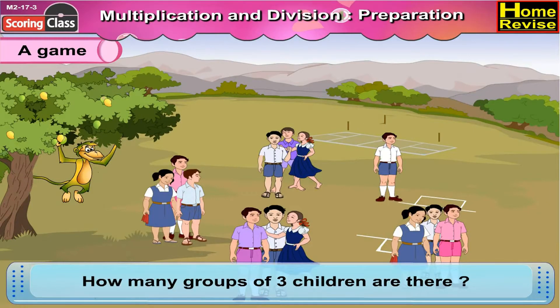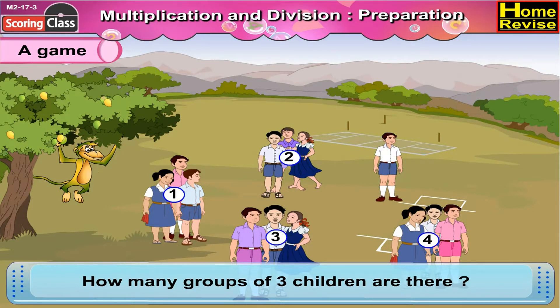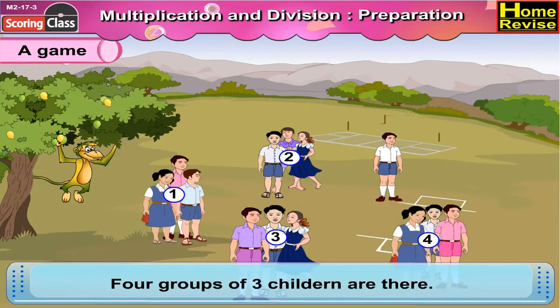How many groups of three children are there? 1, 2, 3, 4. That's correct. Four groups of three children are there.